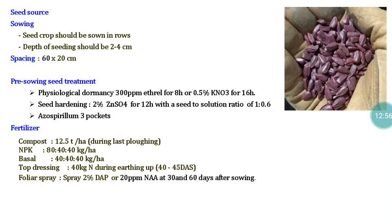Half the dose of nitrogen, full dose of phosphorus and potash, should be applied as basal, and the remaining half of nitrogen on the 40th day after sowing. During the 40th to 45th day, earthing-up operations are important to loosen the soil and provide mechanical support to the main stem to hold the heavy head at the terminal part. Without good anchorage, the stem cannot hold the head, causing lodging and resulting in no seed set. During this time, the remaining 40 kg of nitrogen should also be applied.